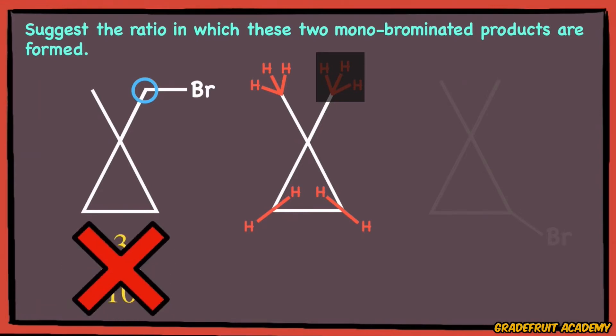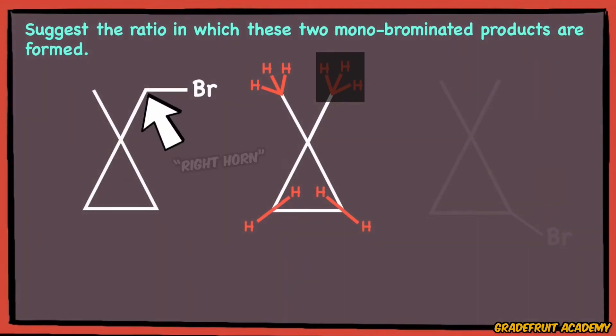Wrong! Well, that's because you must remember that these molecules are in 3D, and even if the bromine atom is attached to the right horn, it is still the exact same thing once you spin it around. Hence, the bromine atom actually has 6 out of 10 hydrogen atoms to choose from, in order to give rise to this compound.